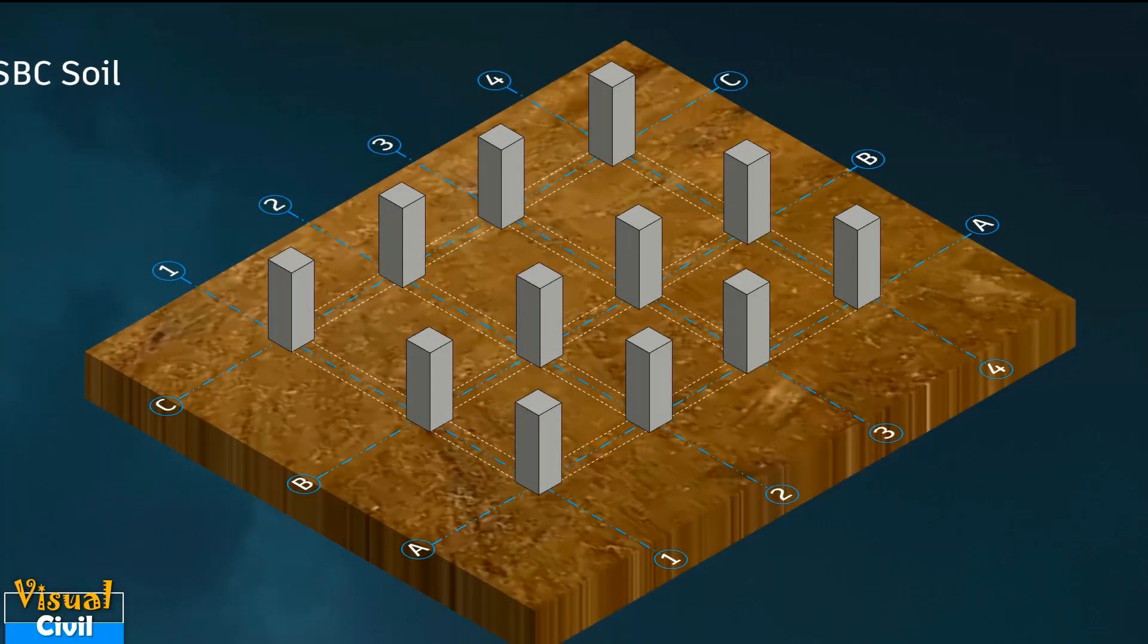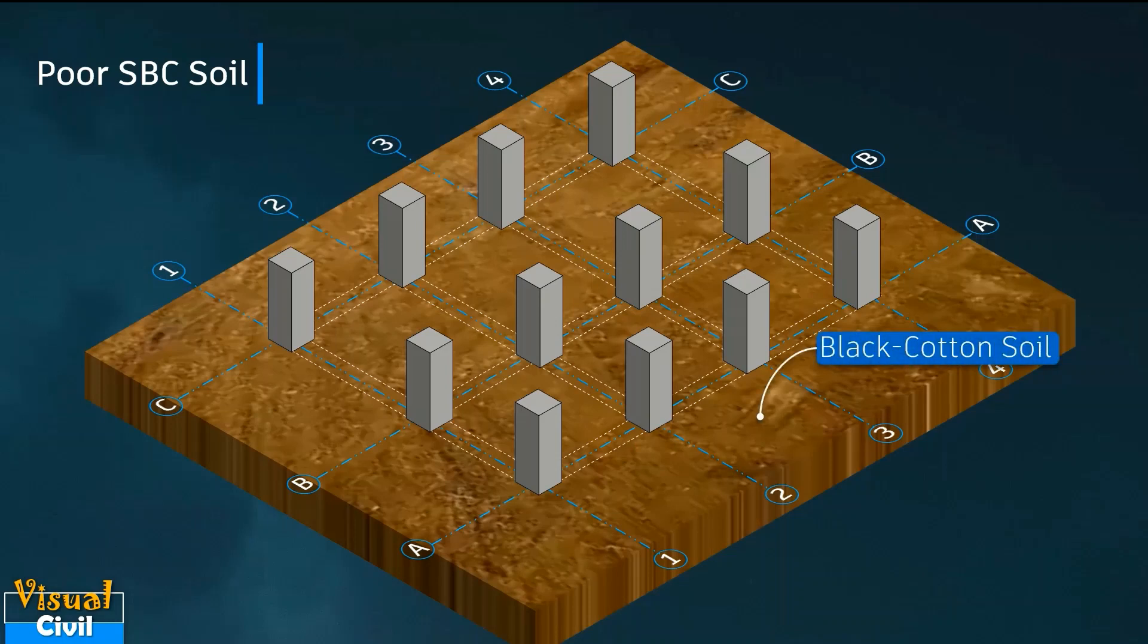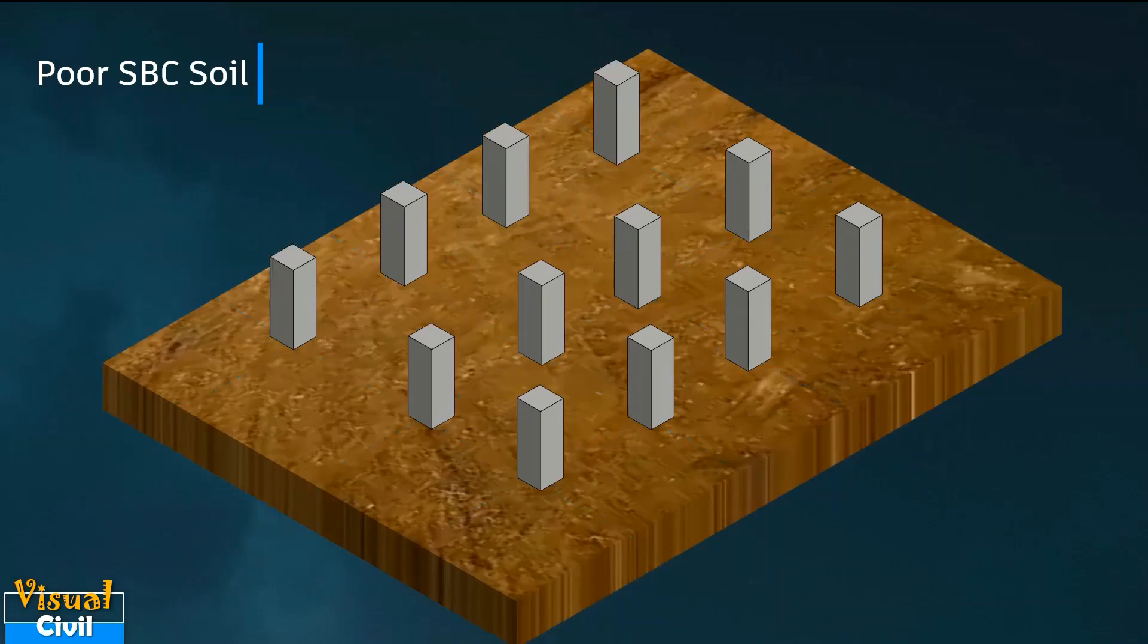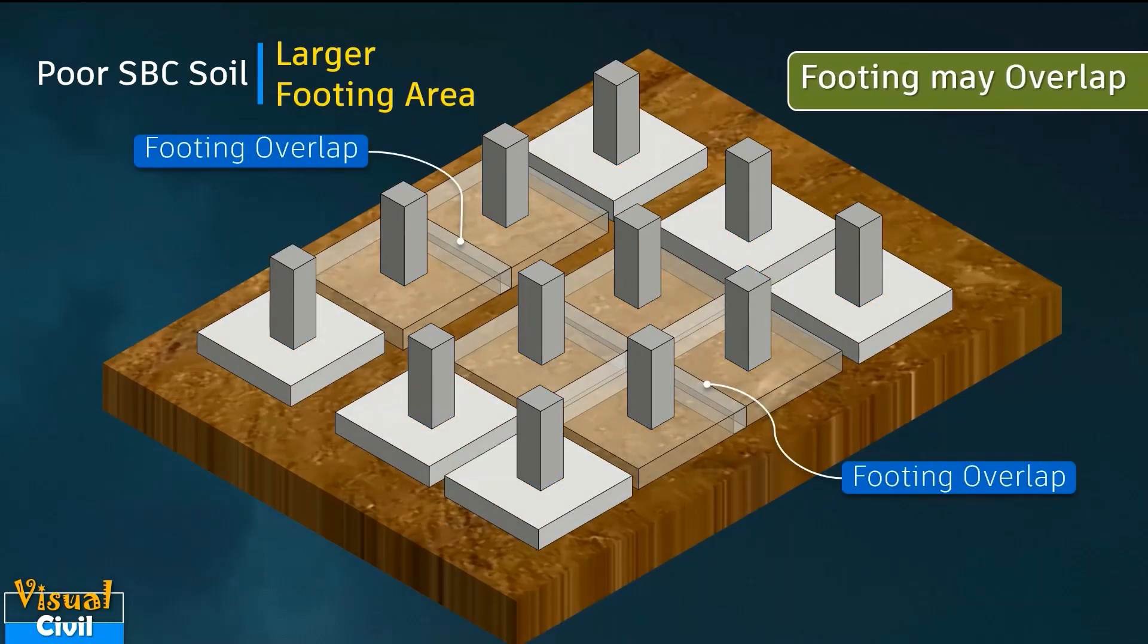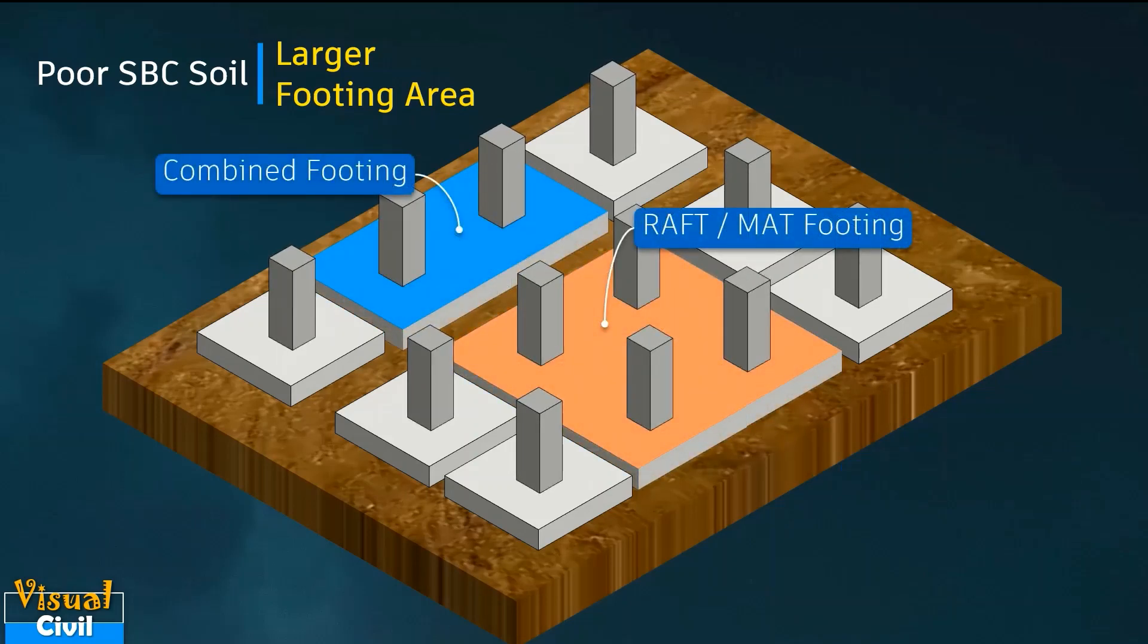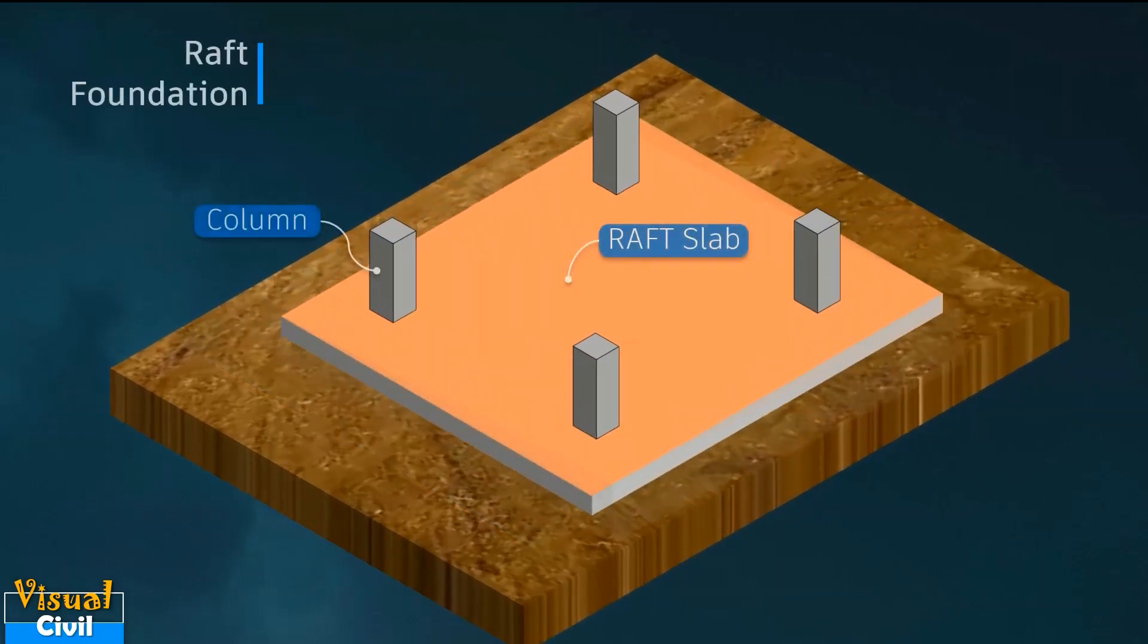In case the bearing capacity of the foundation soil is low, like black cotton soil, then the size of isolated footing will be comparatively more. There may be chances of overlapping of the individual footings. This may lead to combined footing or raft foundation. Let us try to understand the basics of raft foundation.